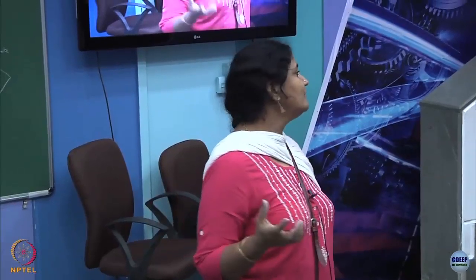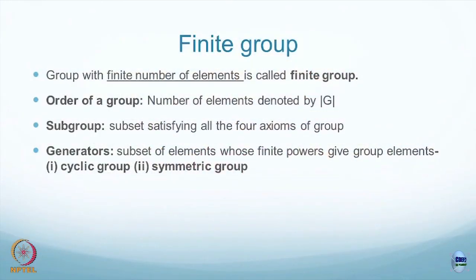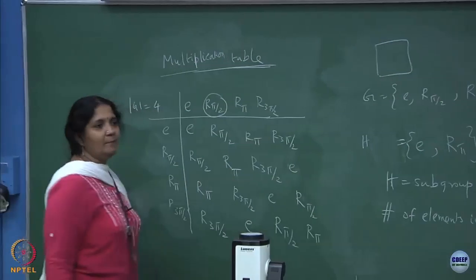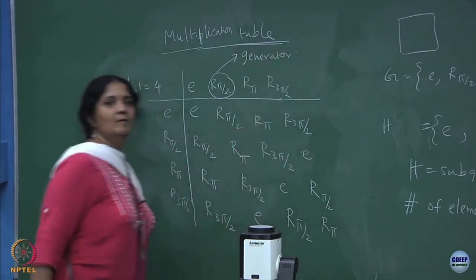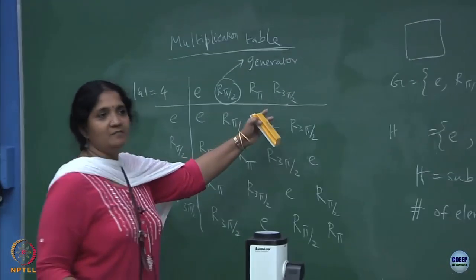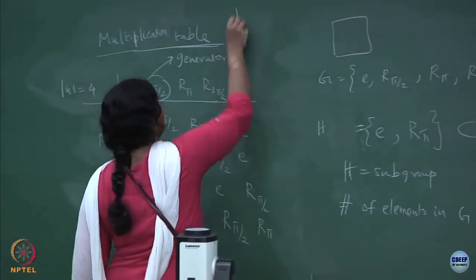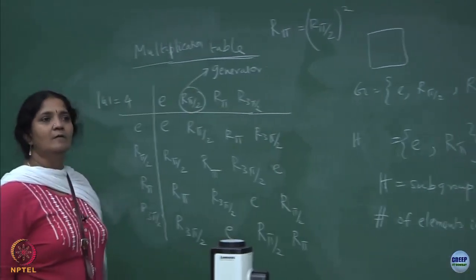The same argument we can apply when looking at generators for sets which form a group. For example, in the square symmetry example I took, I can say that the fundamental operation is rotation by π/2, which I can call a generator. I can take the generator some number of times and it should generate all the elements which are there. So if you want to get r_π, I take r_{π/2} twice.